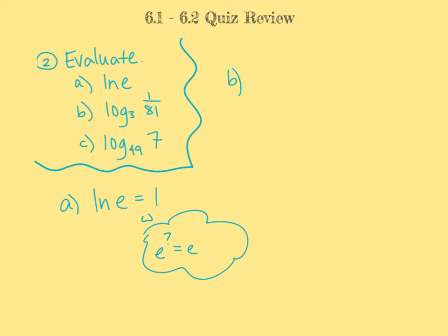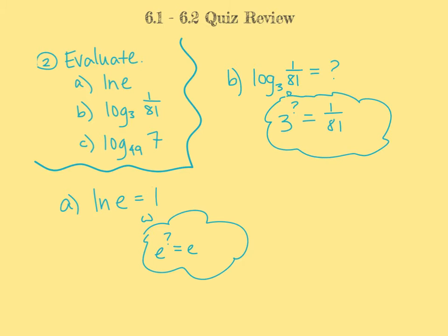In part B, we have log base 3 of 1 over 81, and we're looking for what that equals. Our thought process is: 3 to the what gives us 1 over 81? I know that 3 to the fourth gives us 81, but we want 1 over 81. Therefore, 3 to the negative fourth will flip it and give us 1 over 81. Therefore, our answer is negative 4.